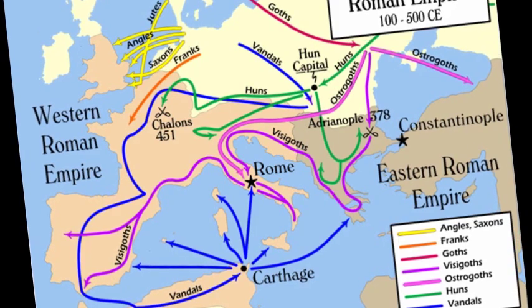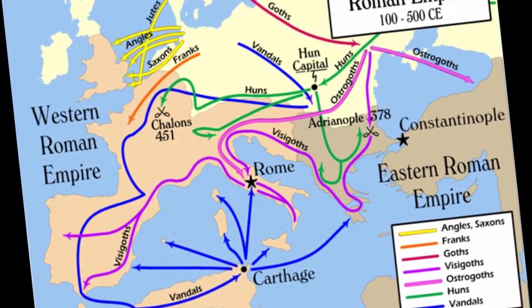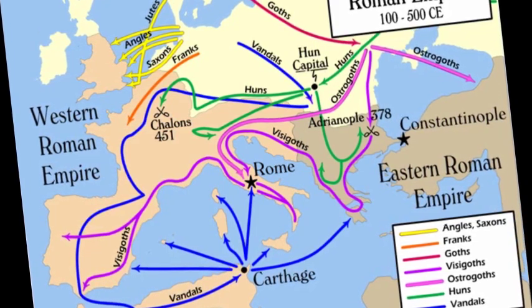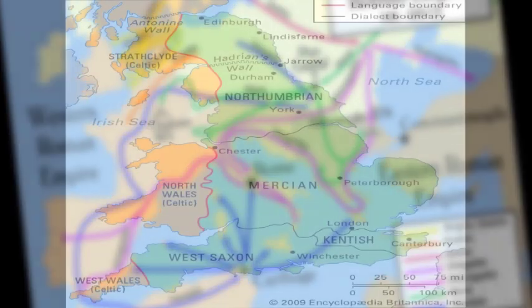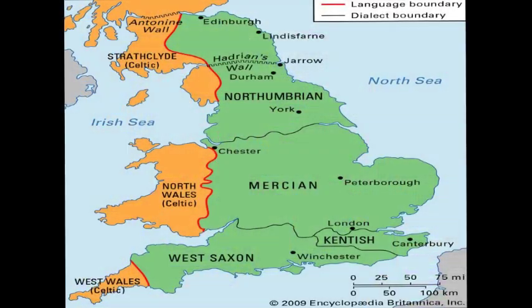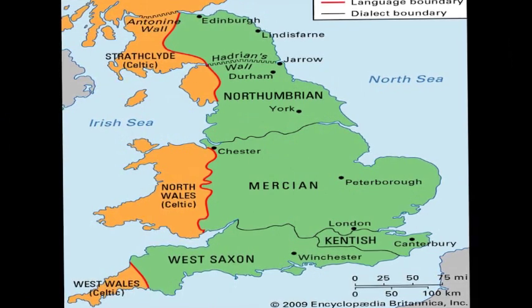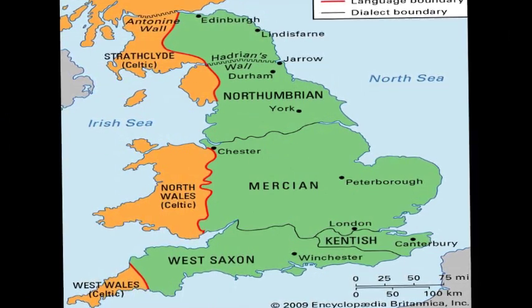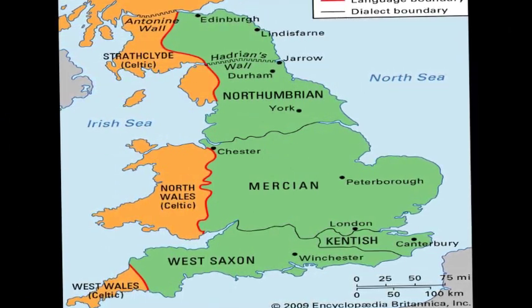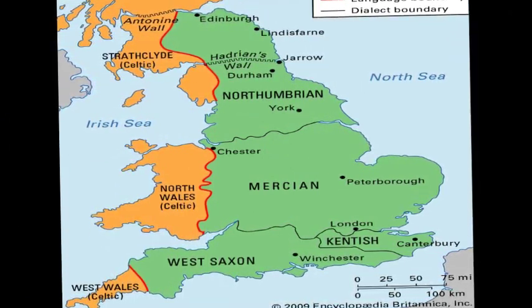As time passed, these dialects evolved into four main dialects: Mercian, Northumbrian, Kentish and West Saxon.